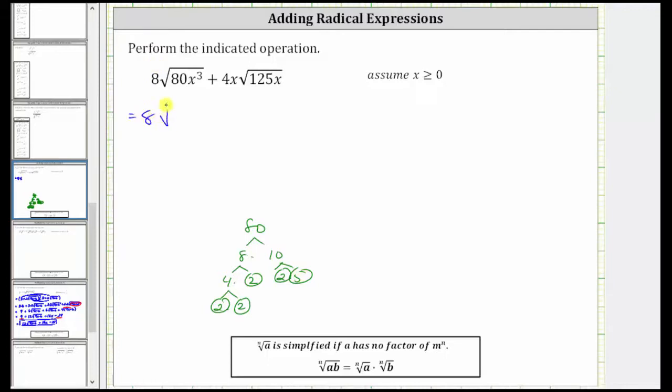Let's write this first expression as eight times the square root of four factors of two and a factor of five. And x cubed is equal to x times x times x. Because we have a square root, remember the perfect square factors of the radicand will simplify. So two times two or two squared is a perfect square factor here and here, and so is x times x or x squared.